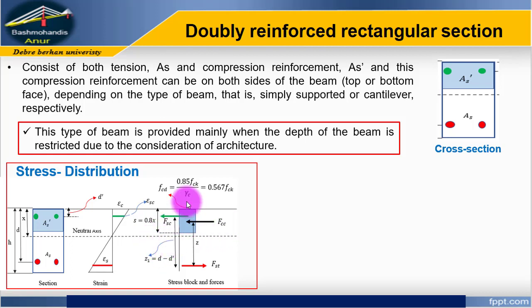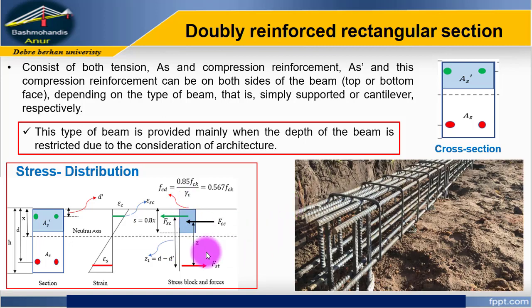Practically, this is a doubly reinforced rectangular section. For a simply supported beam, the bottom bars are in the tension zone and the top bars are the compression reinforcement. For a cantilever beam, the top bars are in the tension zone and the bottom bars are in compression.